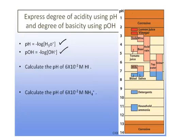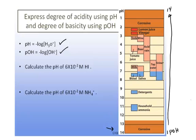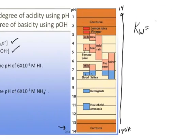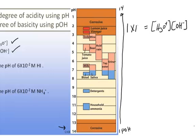The pH scale ranges from 1 to 14, with 1 being the most acidic and 14 being the least acidic. The pOH scale is the opposite of the pH scale, also ranging from 1 to 14. The pH and pOH values are related because the ion product of water is hydronium ion concentration times hydroxide ion concentration equals Kw, which is 1 times 10 to the minus 14. Taking the negative log of both sides gives: 14 equals pH plus pOH.